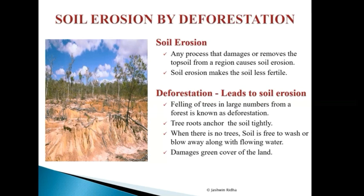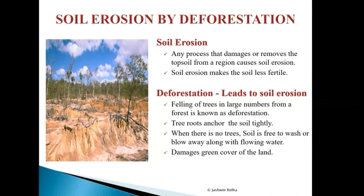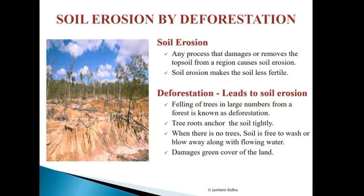Deforestation leads to soil erosion. Felling of trees in large numbers from a forest is known as deforestation. Tree roots anchor the soil tightly, and when there are no trees, soil is free to wash or blow away along with the flowing water, which damages the green cover of the land.